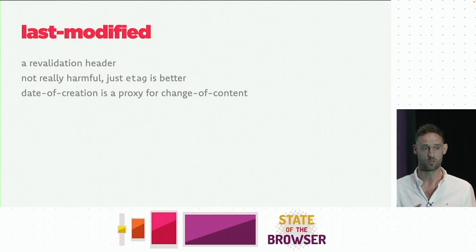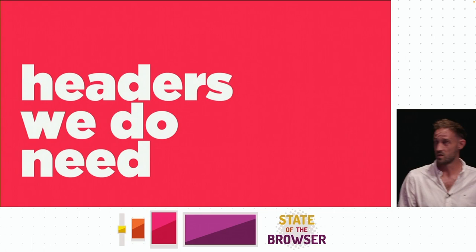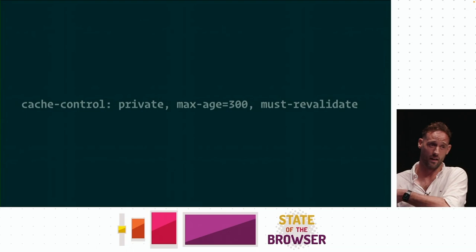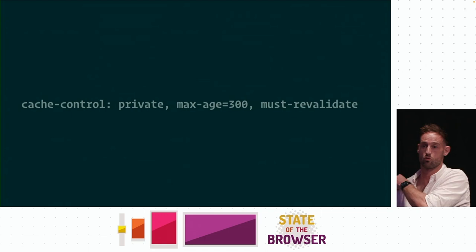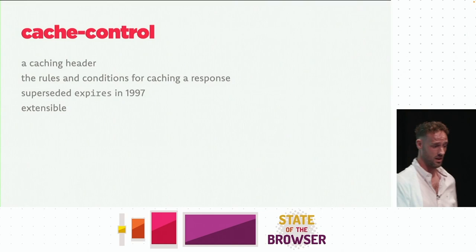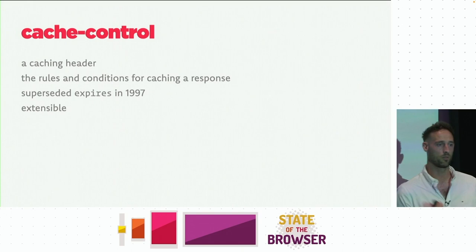So if you're using any of those three, just get rid of them. We're going to replace them with just two headers — all we need to make caching work effectively is two headers. The first one is Cache-Control. A Cache-Control header might look like 'Cache-Control: private, max-age=..., must-revalidate'. These are referred to as directives — this is what makes Cache-Control extensible. With Expires, we can literally only pass in a date. With Cache-Control, we can invent new directives and extend it. This superseded Expires in 1997 and has been the preferred header for over 25 years.